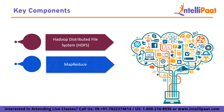Next up we have MapReduce. MapReduce is the core processing component of Hadoop. It is a programming model for processing large data sets in parallel across a cluster of machines. MapReduce works by dividing the input data into smaller parts, processing them in parallel on different nodes, and then combining the results into a final output.